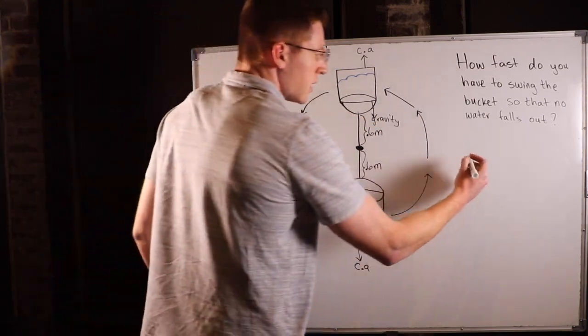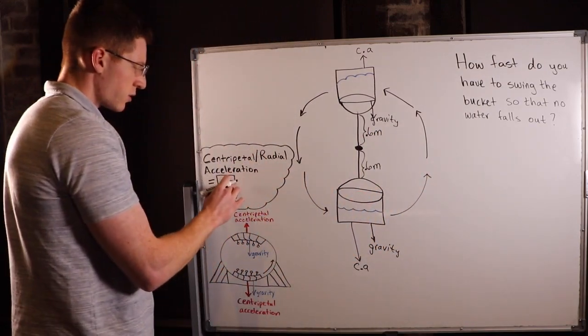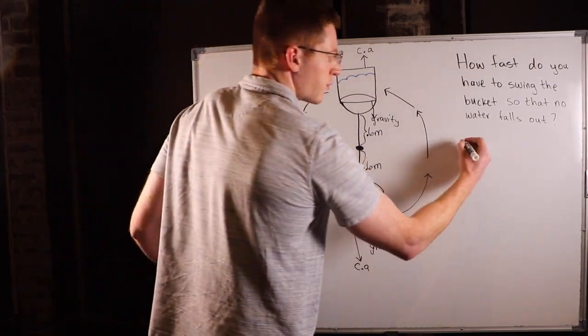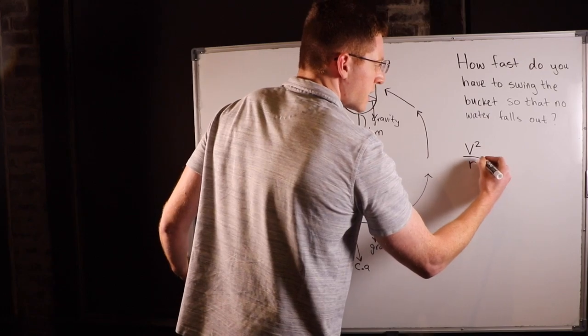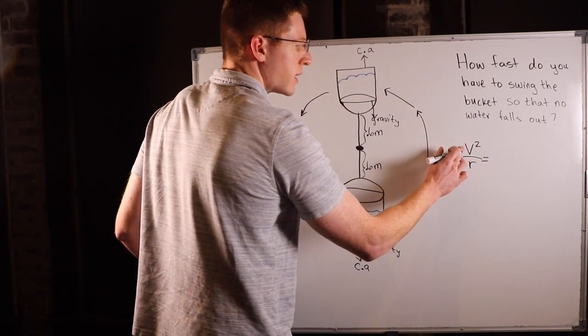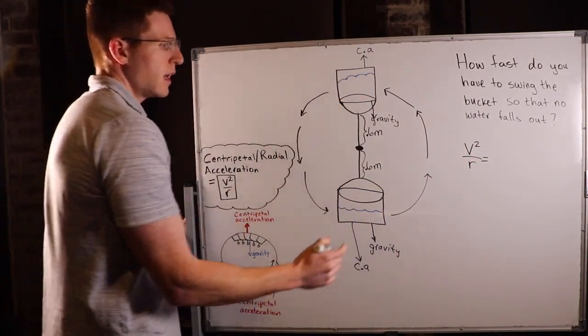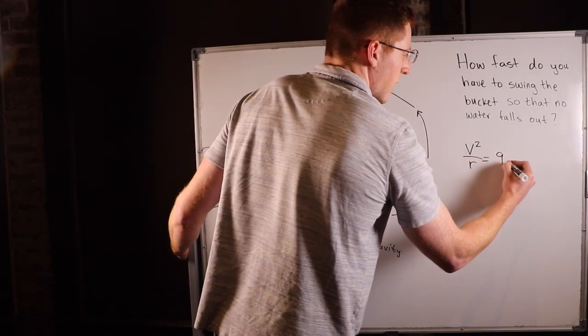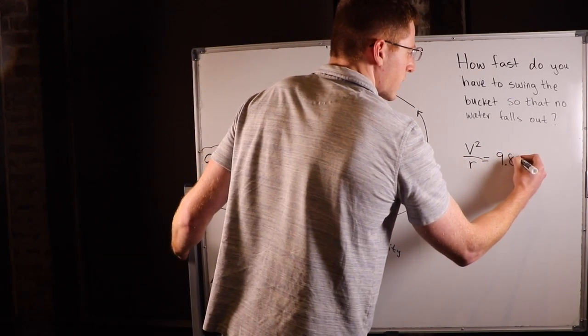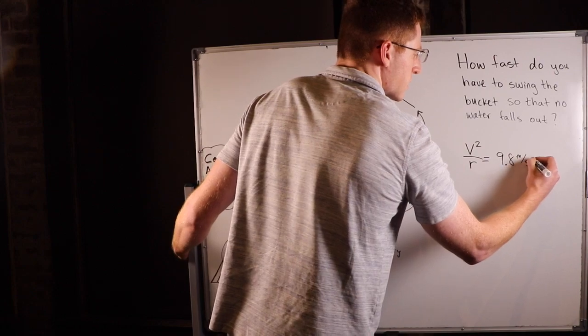We know that centripetal acceleration is equal to v squared over r, or velocity squared over r, and that has velocity in it. So that's what we can solve for to get our answer. And we know that has to equal gravity, or 9.8 meters per second squared.